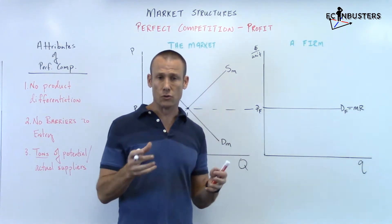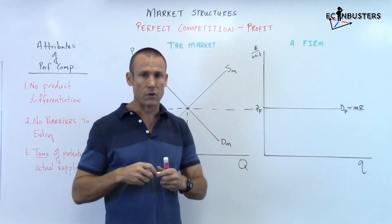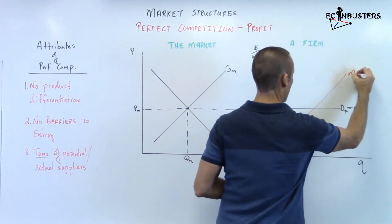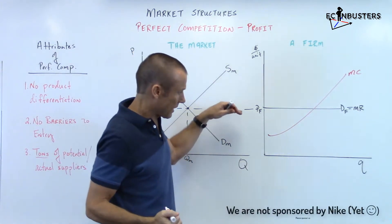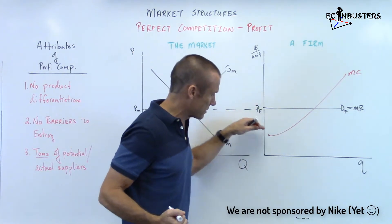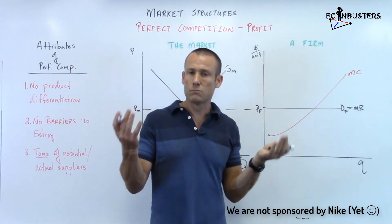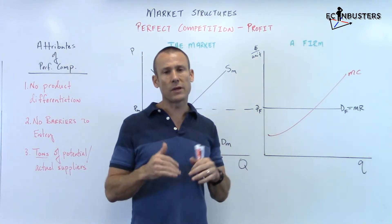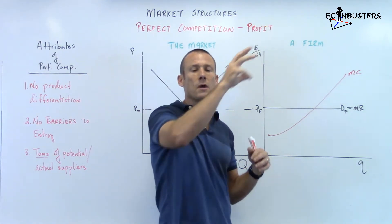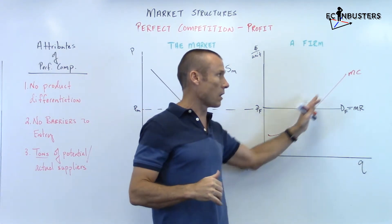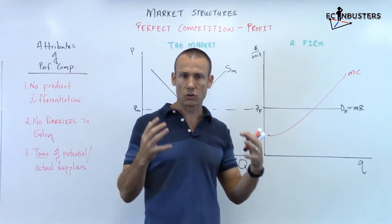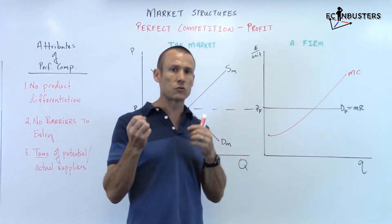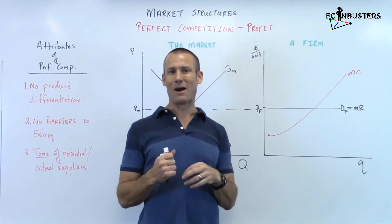The demand curve is perfectly elastic — perfectly responsive buyers to this firm's product. If they try to raise the price at all, quantity demanded goes to zero, because the same exact product is being sold right over there by somebody else and there's plenty of somebody else. Now, this demand curve is also the marginal revenue curve — the price the firm faces is the additional revenue for producing another unit. We also know the marginal cost curve eventually slopes upward — kind of a Nike swish shape, going down and then up.